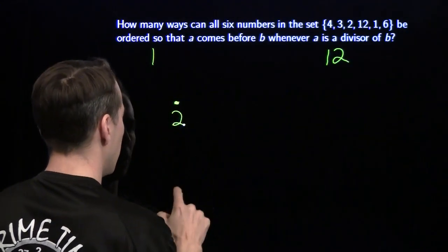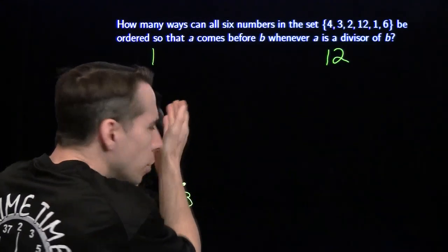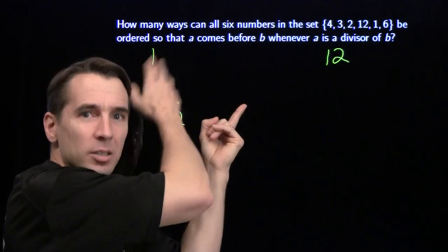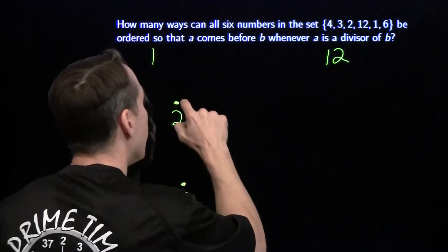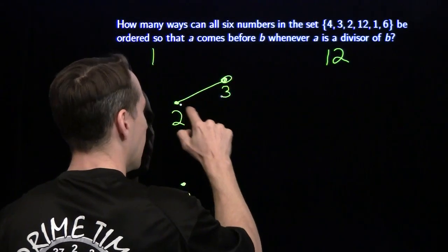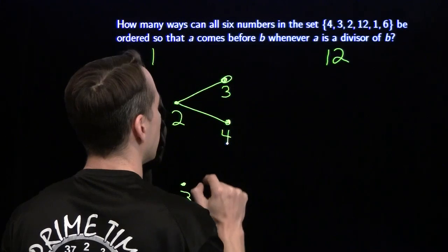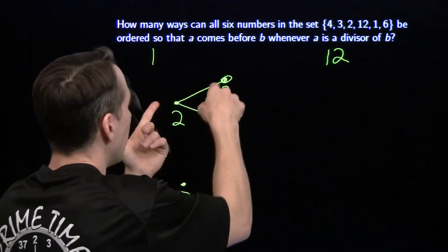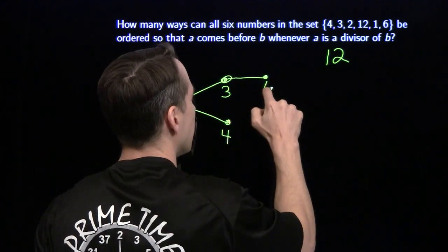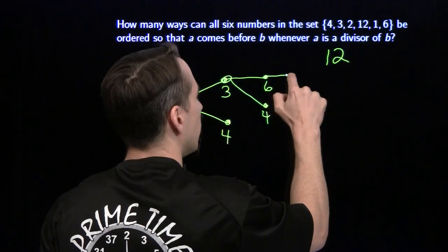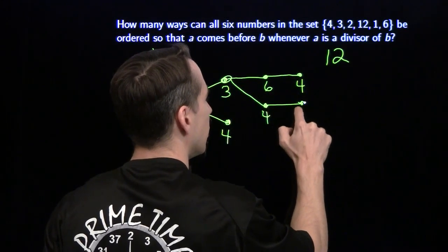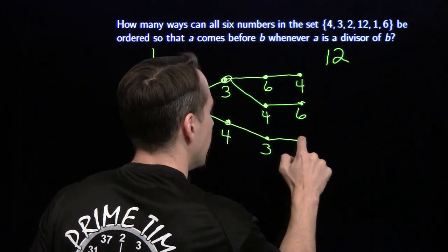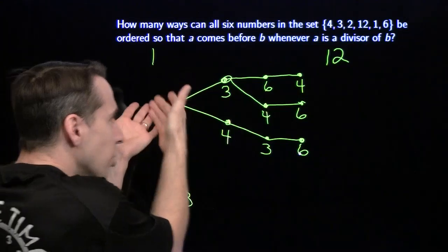What if we put 2 next? If I put 2 next, I can't put 6 after it because 3 has to be before 6. But I can put 3 next or I can put 4 next. Now if I go 2 then 3, I can put the 6 because all of its divisors besides itself are already before it — so I can go 2, 3, 6. I can also go 2, 3, 4. And if I've gone 2 then 4, I can't put 6 next because 3 has to come before 6, so we have one choice: 3 and then 6. Those are the only cases that start with 2.